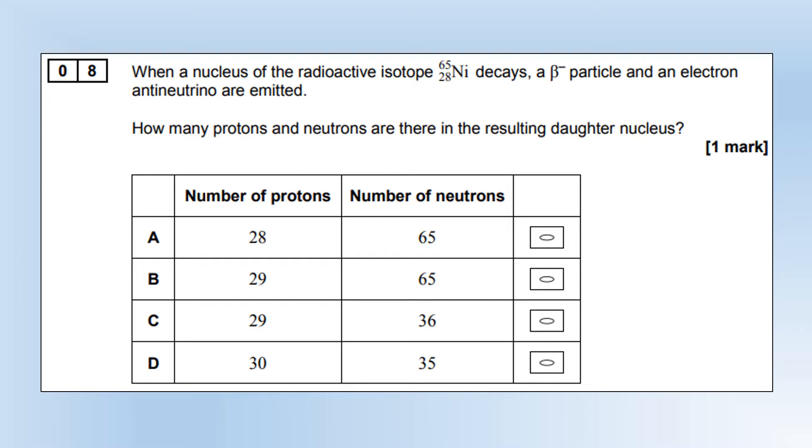It's a beta-minus particle, which means a neutron turned into a proton. So the number of protons is going to go up by 1, so it's going to be 29. So it's going to be either B or C. 65 is the nucleon number, so it's going to be option C for the number of neutrons.